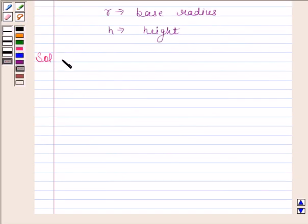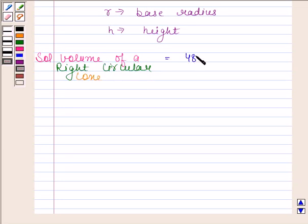In the question, we are given that the volume of a right circular cone is equal to 48π cm³, and it is also given that its height h is equal to 9 cm. We have to find the diameter of its base.